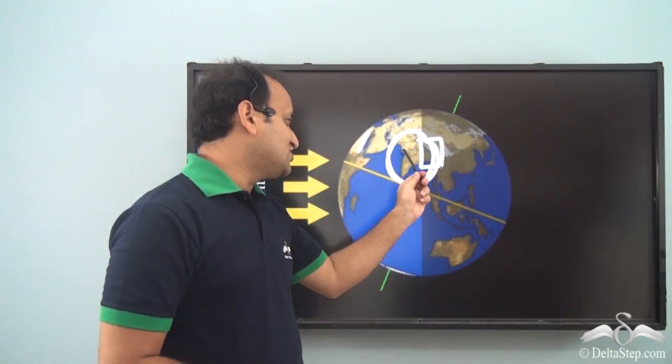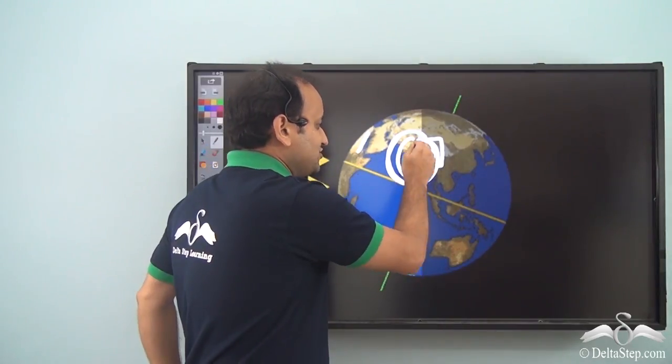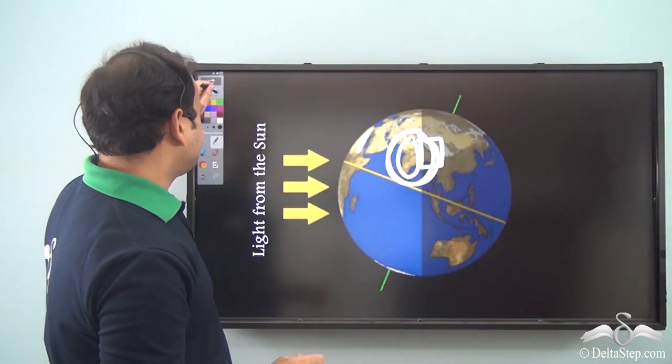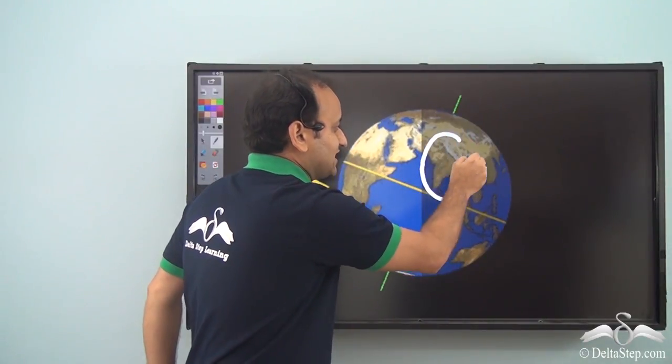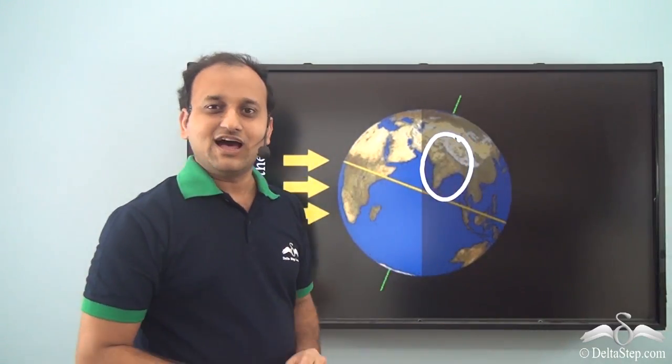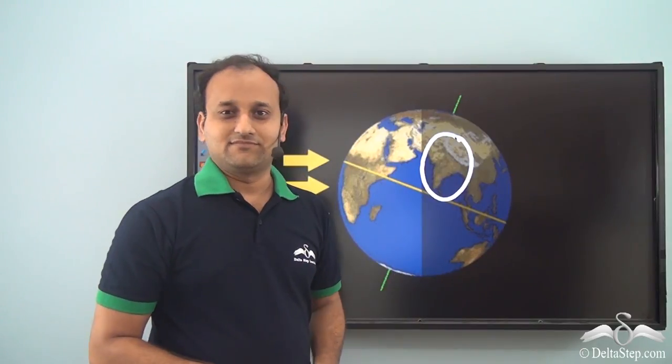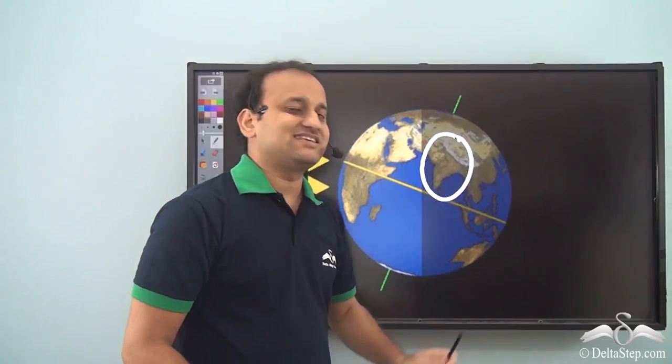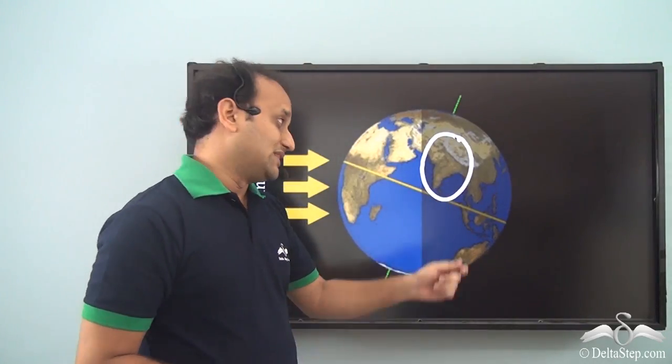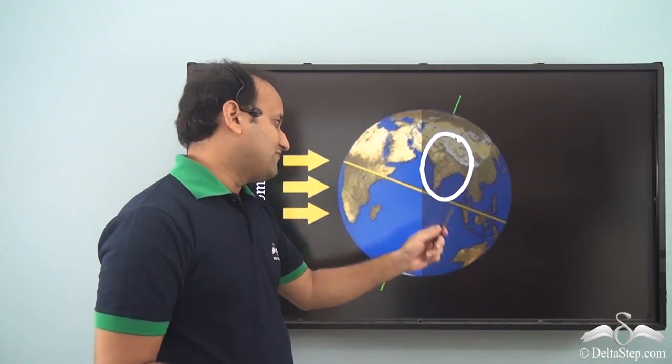So very soon the Sun will set in this portion too, and in some time as it moves away it will be completely out of the sunlight. That is, the Sun will set in India and it will be nighttime. Similarly for every part of the world and every country in the world, this is exactly what happens. And when this happens, then you have day and night.